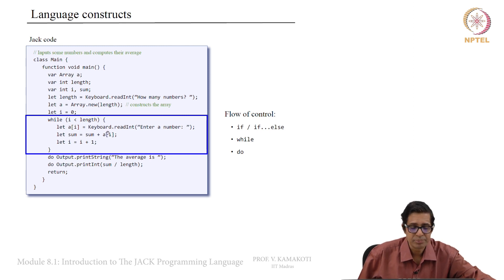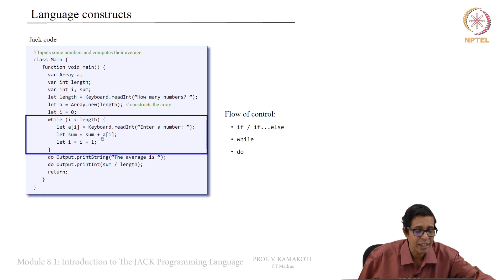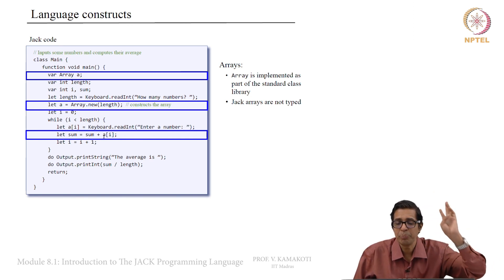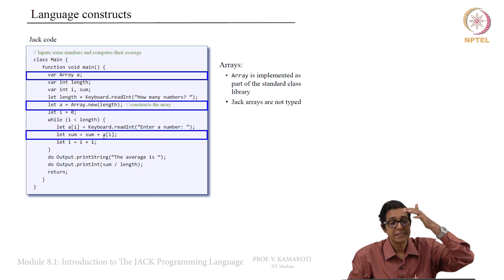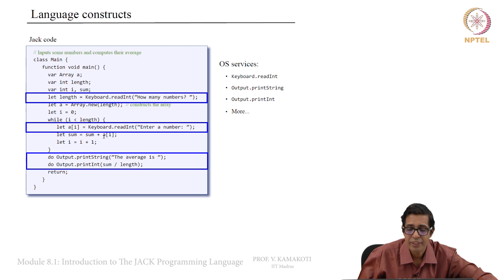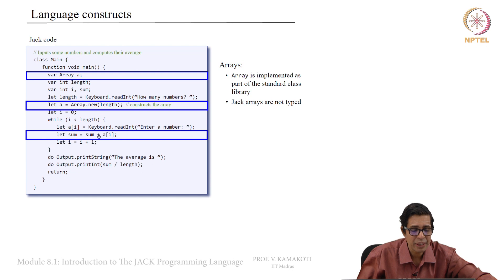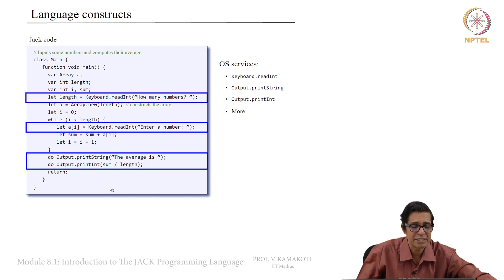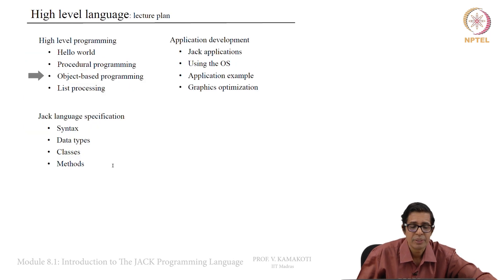For flow control, Jack has a while statement, a do statement, and if and if-else constructs. Regarding OS services: Keyboard dot readInt, Output dot printString, Output dot printInt, and many more are equivalent to scanf and printf type statements in C, all provided by the operating system.